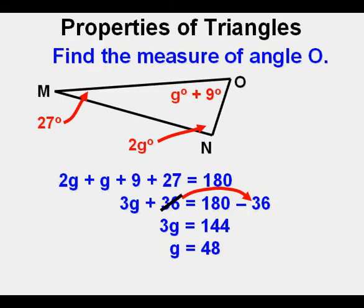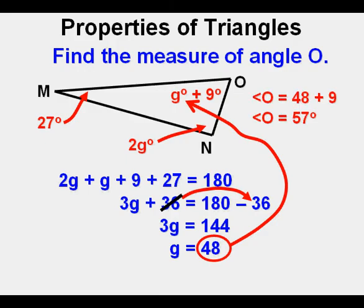Is that our answer? No, it's not. We're asked to find the measure of angle O, so we plug in 48 for G. 48 plus 9 equals 57, so angle O is 57 degrees in measure.